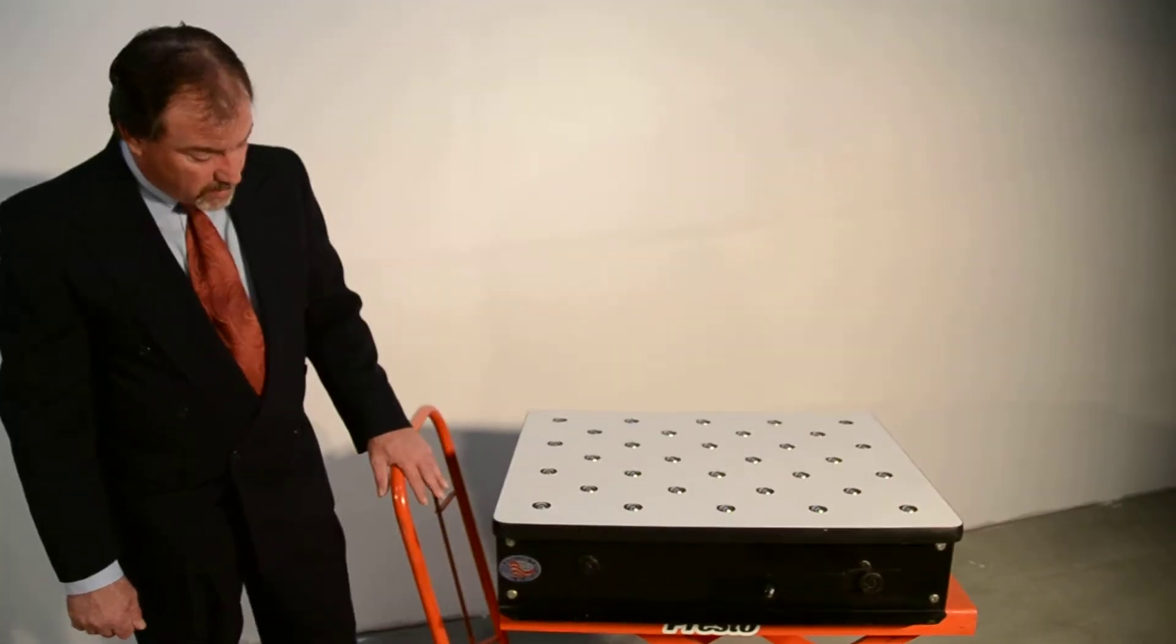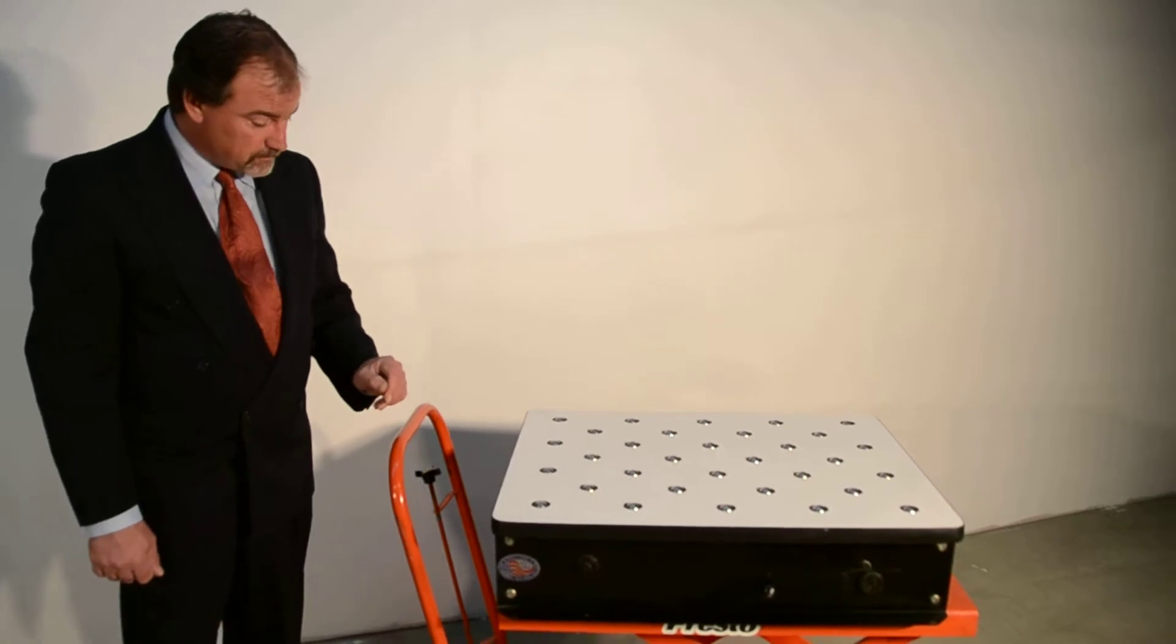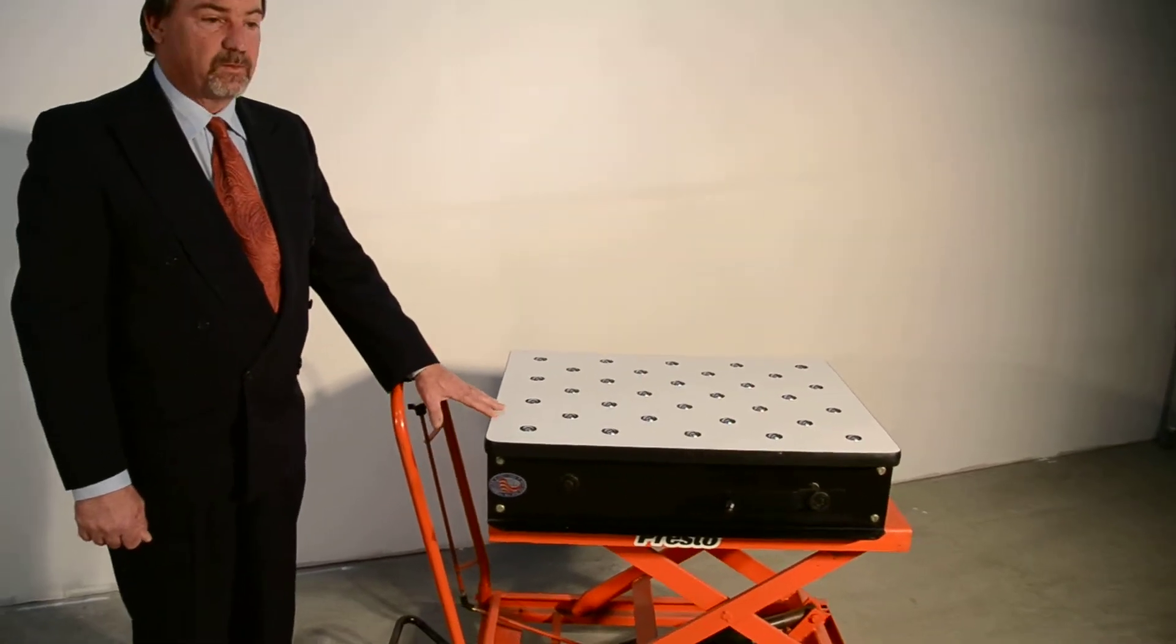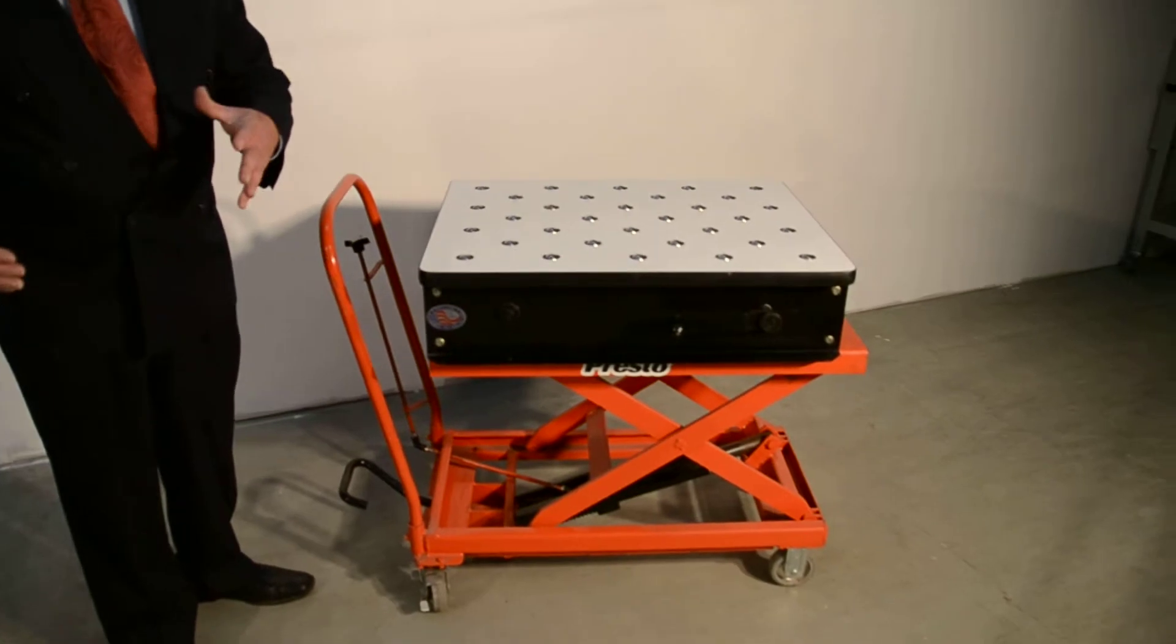We're also showing this unit mounted onto a scissor lift. The reason we're doing that is the mobile retractable ball transfer table is used for material handling.